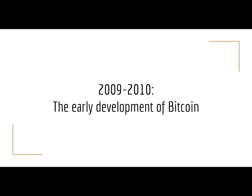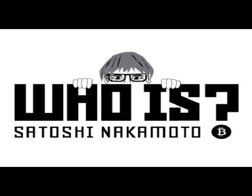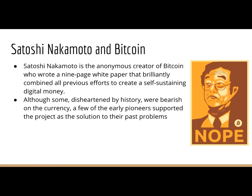Now we're going to talk about Satoshi Nakamoto. 2009 and 2010 were the formative years of Bitcoin. Who is Satoshi Nakamoto? A lot of people were very curious about who this man was. One funny incident was that many people believed a guy named Dorian Satoshi Nakamoto was him, and he was actually harassed by investigators and journalists — but he said it wasn't him. We actually don't know who Satoshi is. He's the anonymous creator of Bitcoin who wrote a nine-page white paper that brilliantly combined all previous efforts to create a self-sustaining digital currency. Some people even believe he's not one person but rather multiple people.